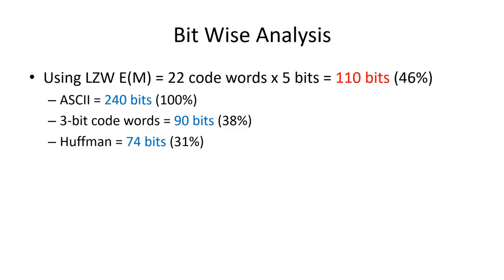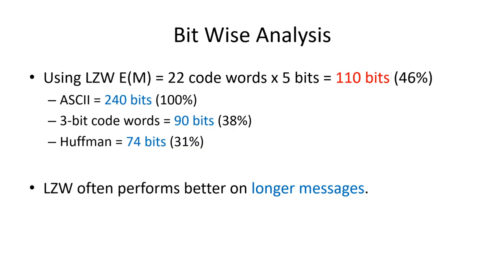With bit width 5 we got 110 bits, which is about 46% compression compared to ASCII — not as good as three-bit encoding or Huffman. One reason is that LZW works a lot better with longer messages. A longer message gives more opportunity to take advantage of the longer sequences added to our directory. Imagine if we encountered the word 'banana' several more times — we'd get significant savings encoding it with the longer sequence.